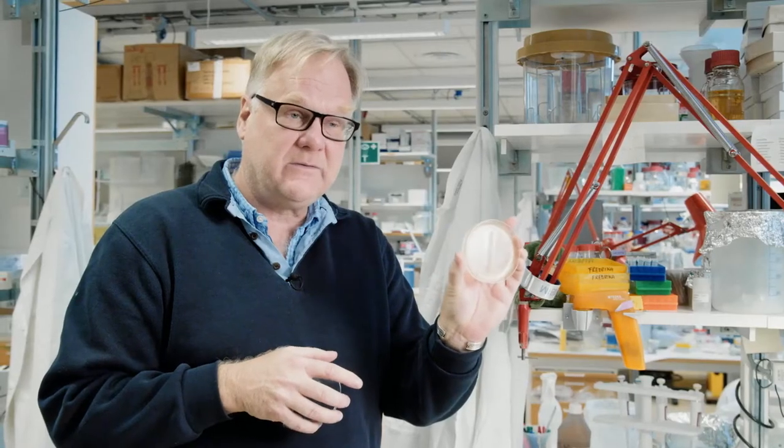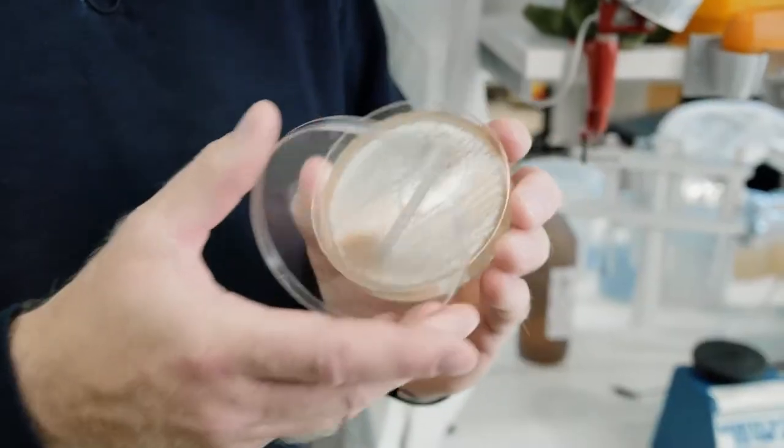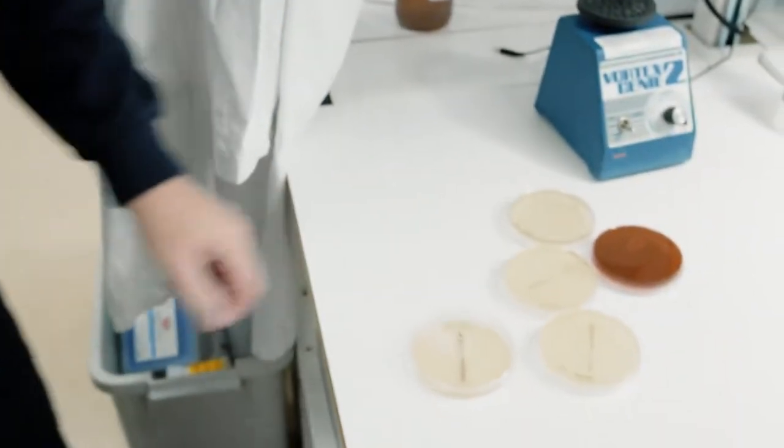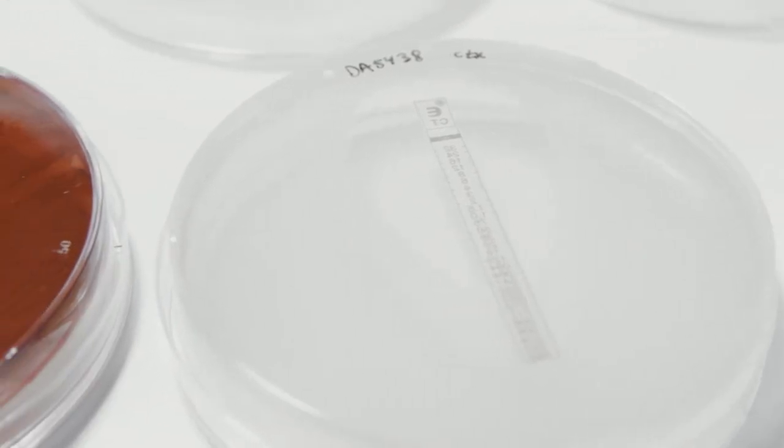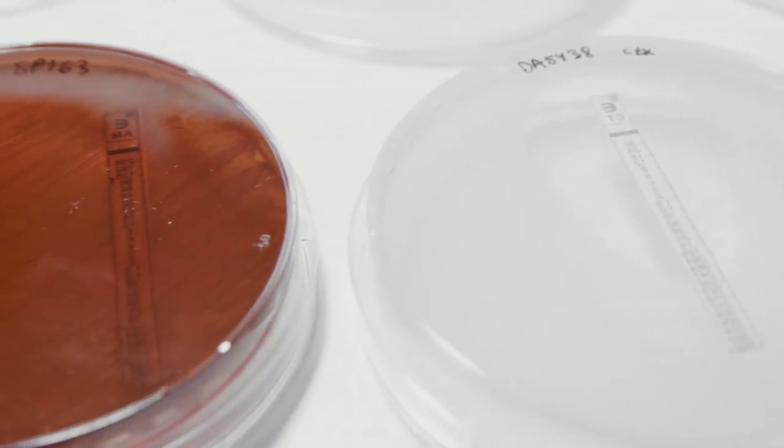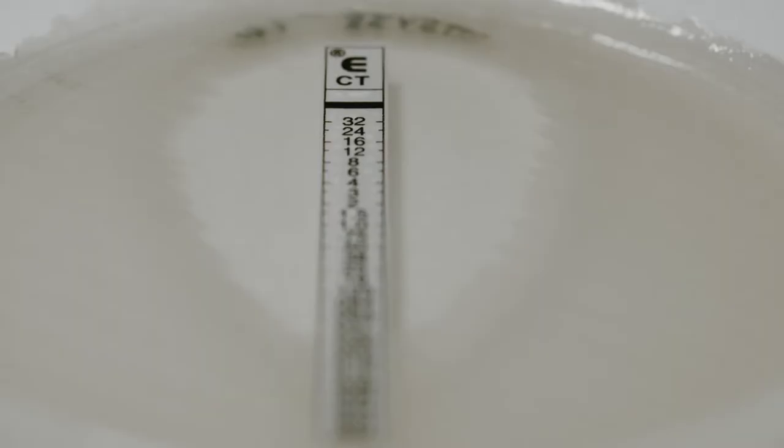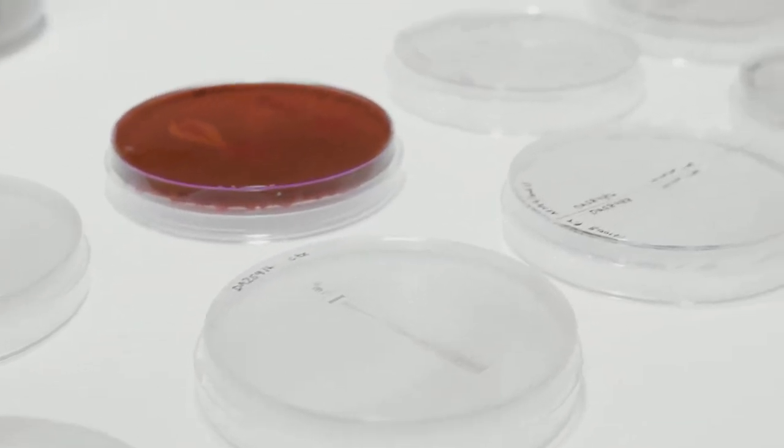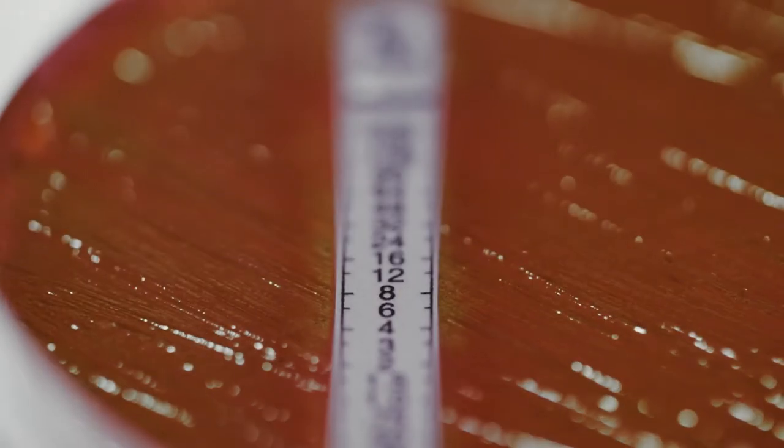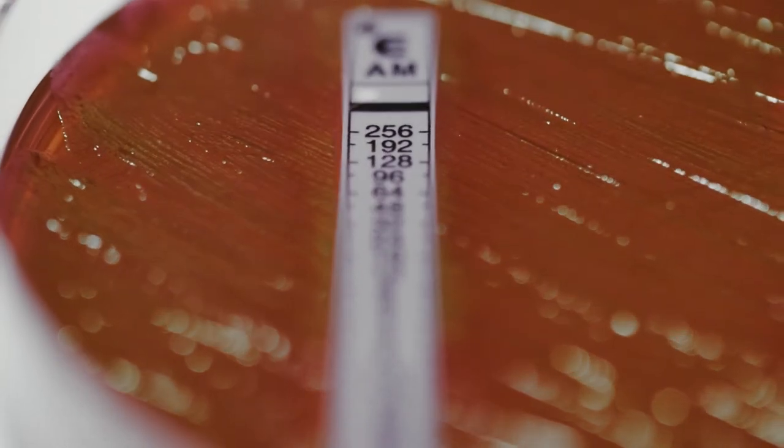These plates are covered with the intestinal bacteria E. coli. Harmless in the intestines, elsewhere in the body it can cause severe damage and become resistant to treatment. Here is one such kind of resistant bacteria, with the strength to grow all over the plate, even though the stick in the middle is covered with antibiotics.